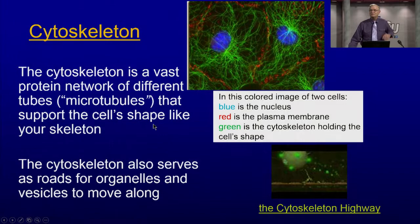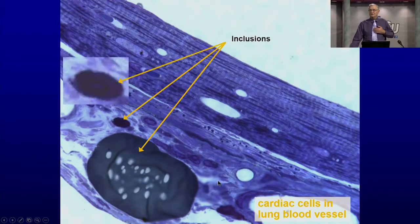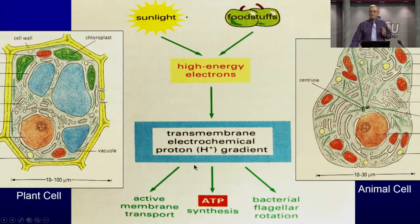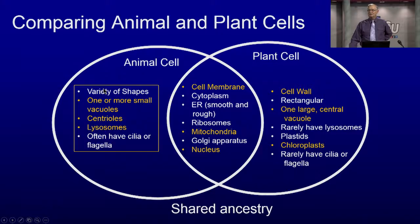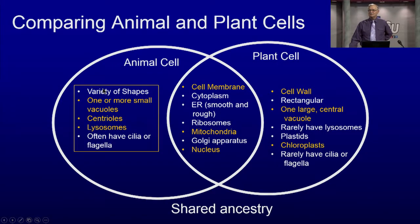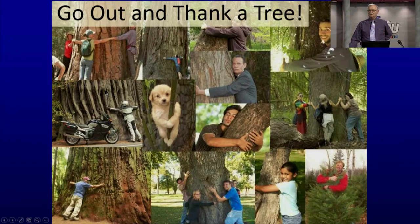The cytoskeleton is the railroad track to follow. A plant cell uses sunlight to make energy, while animal cells use stored sunlight in the form of food to make energy. It's anabolic versus catabolic. Go out and hug a tree, because it's making oxygen for you.